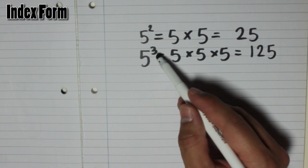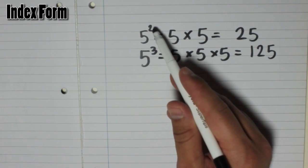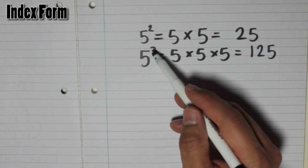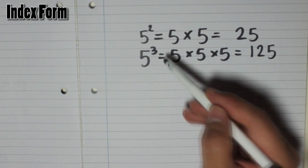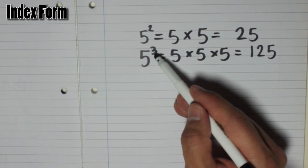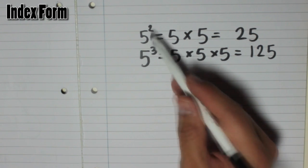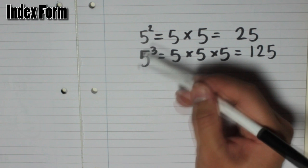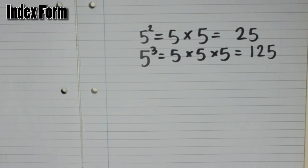Now the little number on top — the 3 and the 2 — they are called indices. That's the plural, meaning more than one of them. If there's only one, you call that the index. And when a number has been written like that, it's said to be in index form.